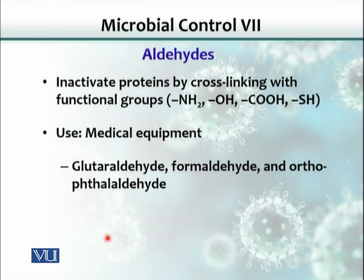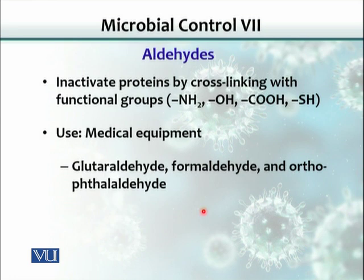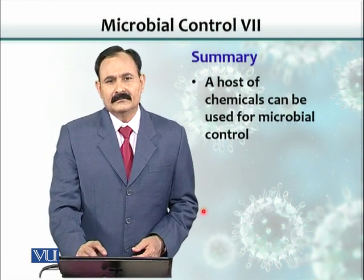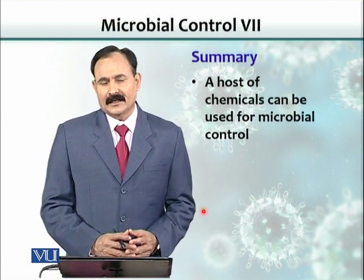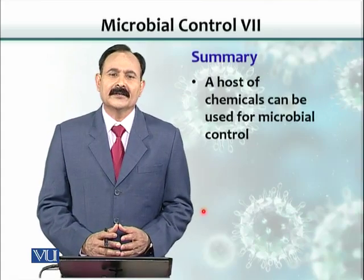Aldehydes are another group of chemicals. Two commonly used aldehydes are glutaraldehyde and formaldehyde. Formaldehyde is pungent and also carcinogenic, so it is not very often used, but there are situations where it must be used for disinfection of very dangerous, virulent, or highly pathogenic microorganisms. In summary, we have a host of antibacterial agents available, and their use depends on the situation.